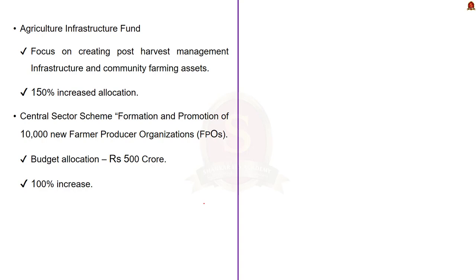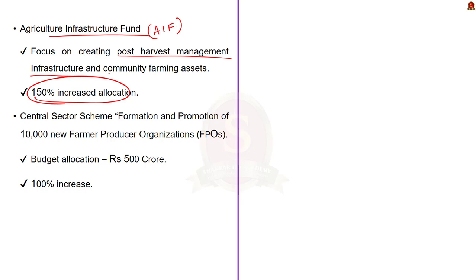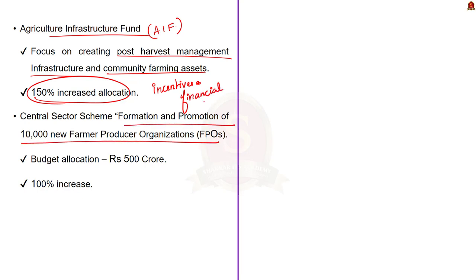In addition to Rashtriya Krishi Vikas Yojana, the allocation to the Agriculture Infrastructure Fund (AIF) has been increased by 150% — that is 500 crore. This fund aims at creating post-harvest management infrastructure and community farming assets through incentives and financial support. Finally, the central sector scheme for formation and promotion of 10,000 new Farmer Producer Organizations received an allocation of 500 crore, a 100% increase compared to last year.